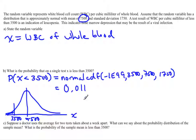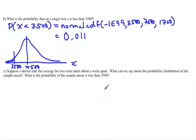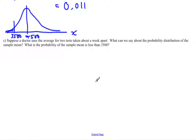That's pretty small, so most likely that would be bad if somebody had this, but doctors are a little more worrisome about treating people for things they don't really have, so some doctors might actually average two tests taken a week apart. If we want to find the probability that the sample mean is less than 3,500, we first need to know what is the probability distribution of the sample mean. This goes to the concept of a sampling distribution.